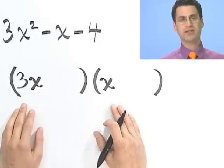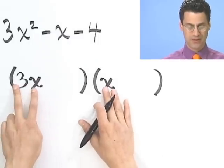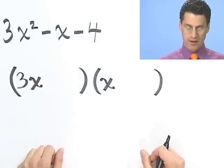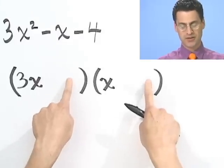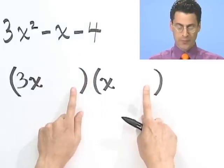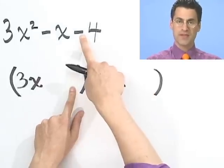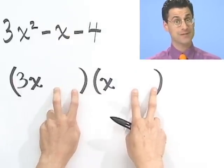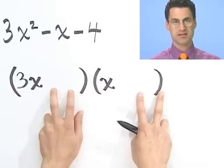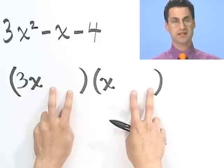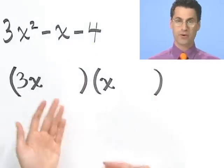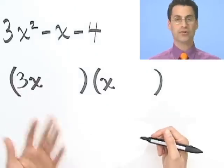Notice this has the pleasant property that when I multiply these two things out, I get that first term. Now I've got to get everything else to work out. These two constant terms have to multiply to give me minus 4. The product of two numbers is negative, which tells me the signs have to be opposite — if both positive, the product is positive; if both negative, the product is positive. So I have to have opposite signs, and it has to be two numbers whose product is 4. Possibilities: 4 and 1, or 2 and 2.